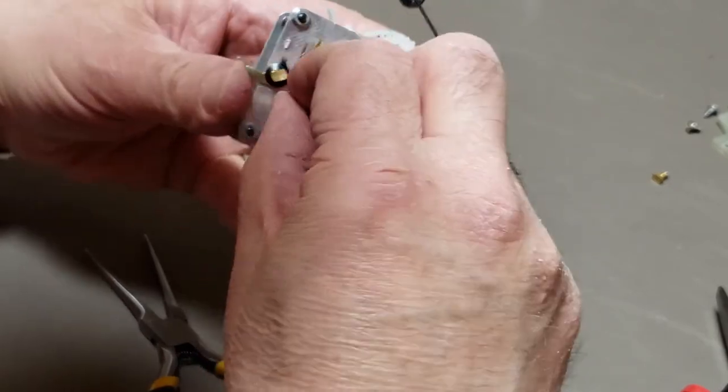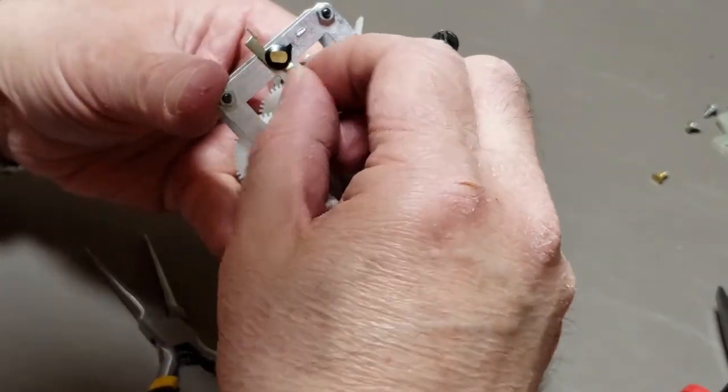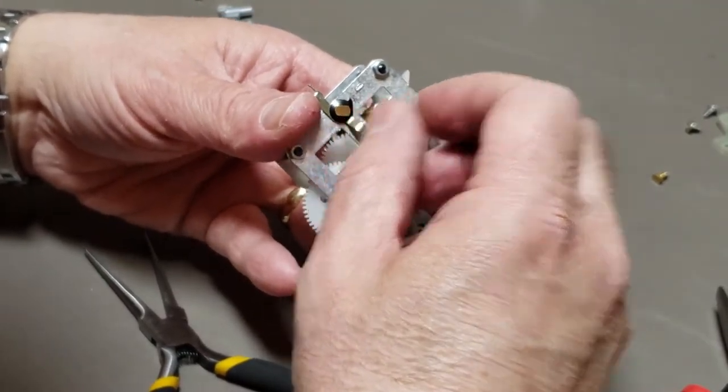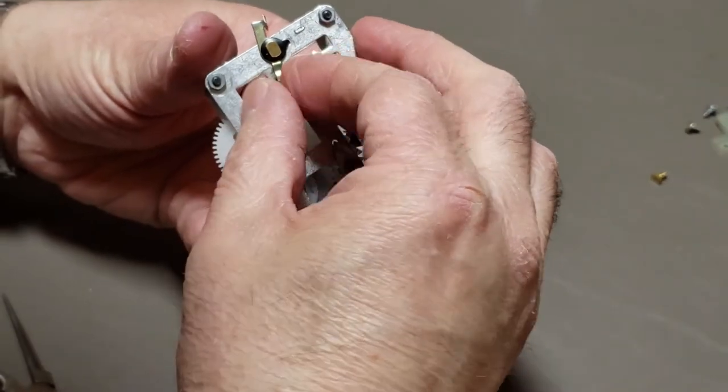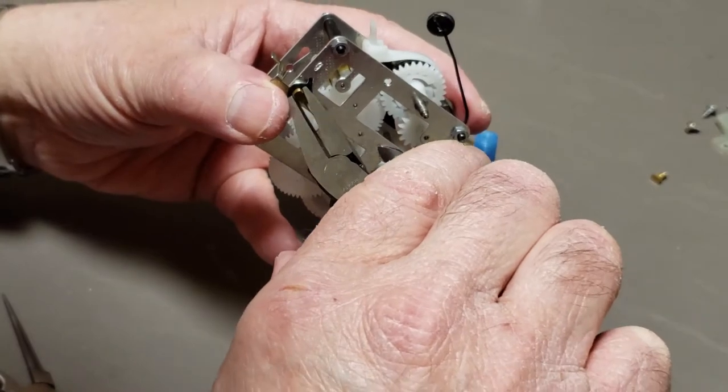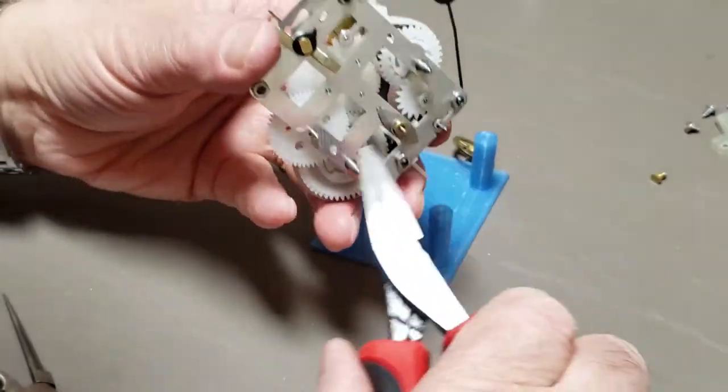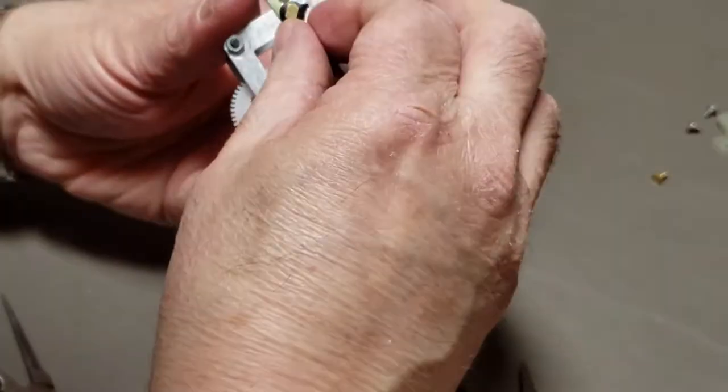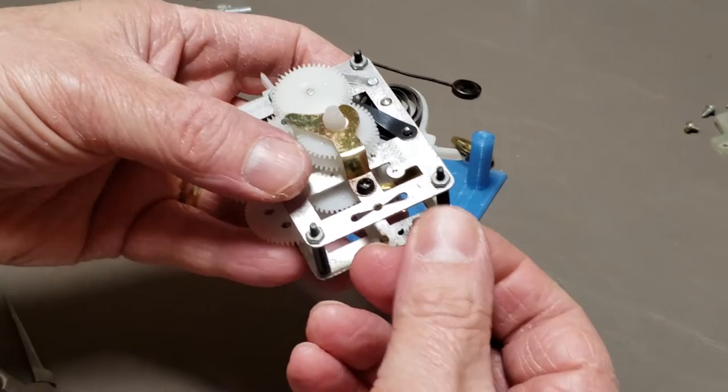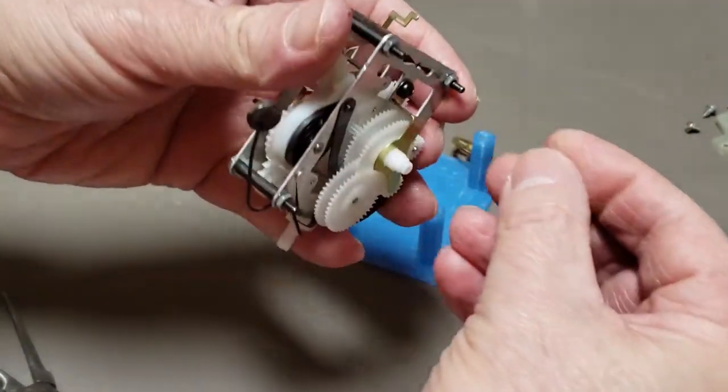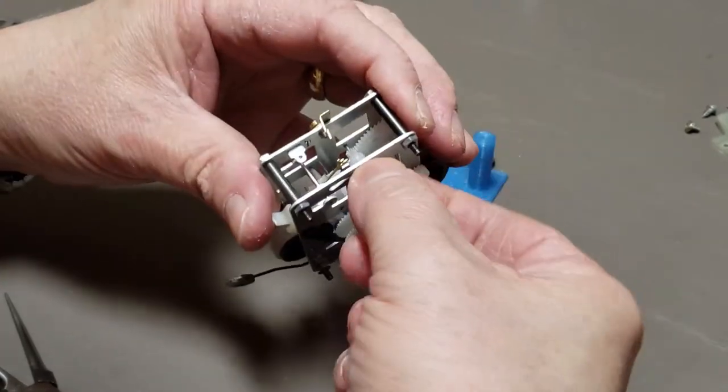Now, my understanding is that both these screws adjust. This one adjusts the tension on the fast, slow control. I want that to be fairly stiff. And then the other screw here adjusts the end shake of the balance wheel.